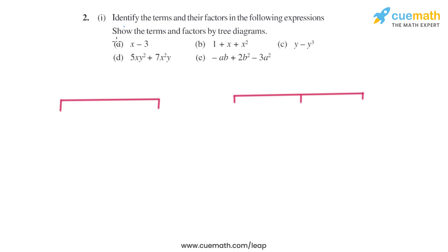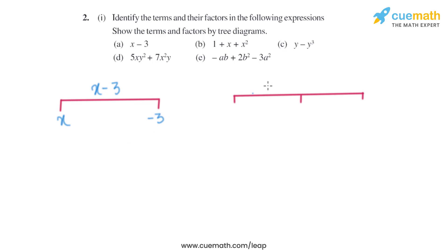Now using the same concept, we will solve this question. In the first part, the expression given is X minus 3. The terms are X and minus 3, and the factors of X and minus 3 will be the same — X and minus 3 only. Now let's move on to the second part.